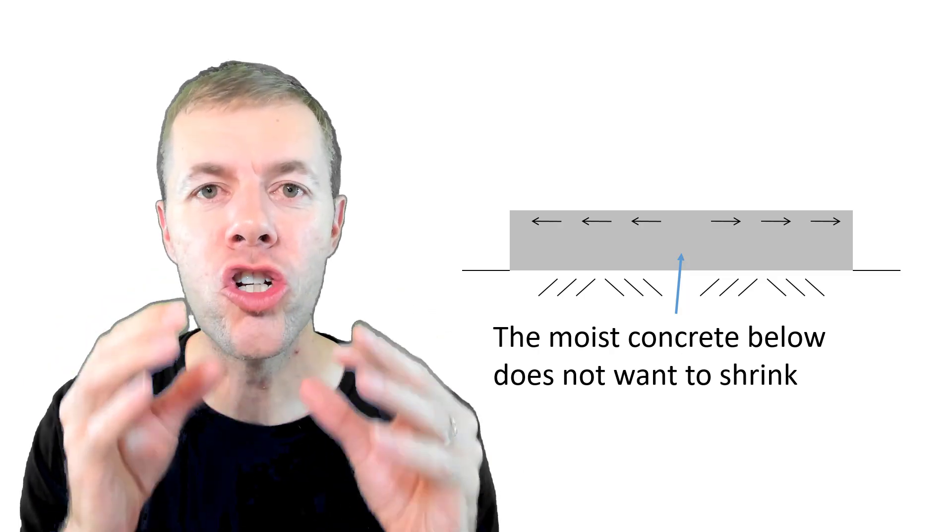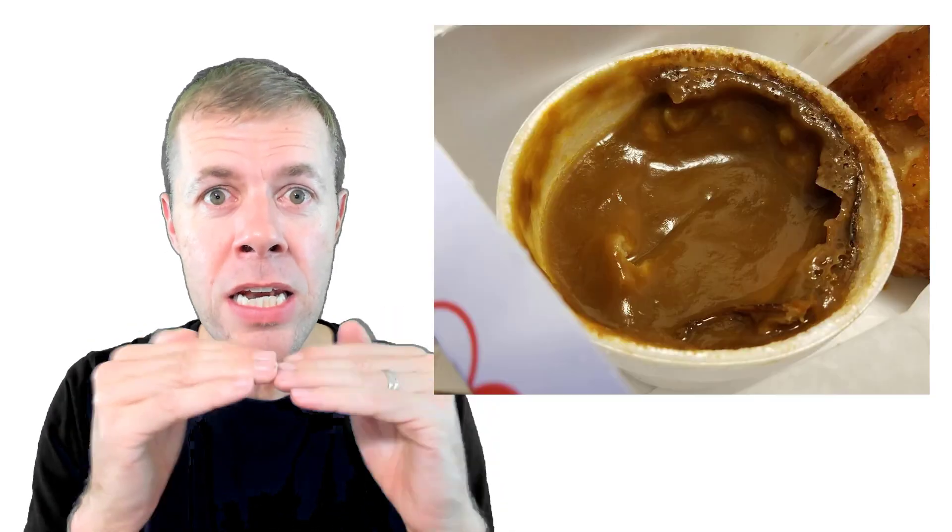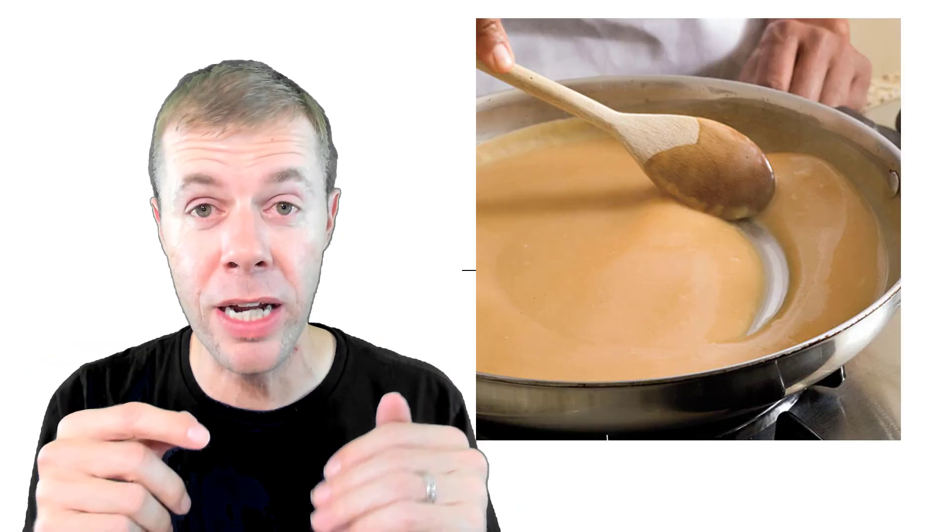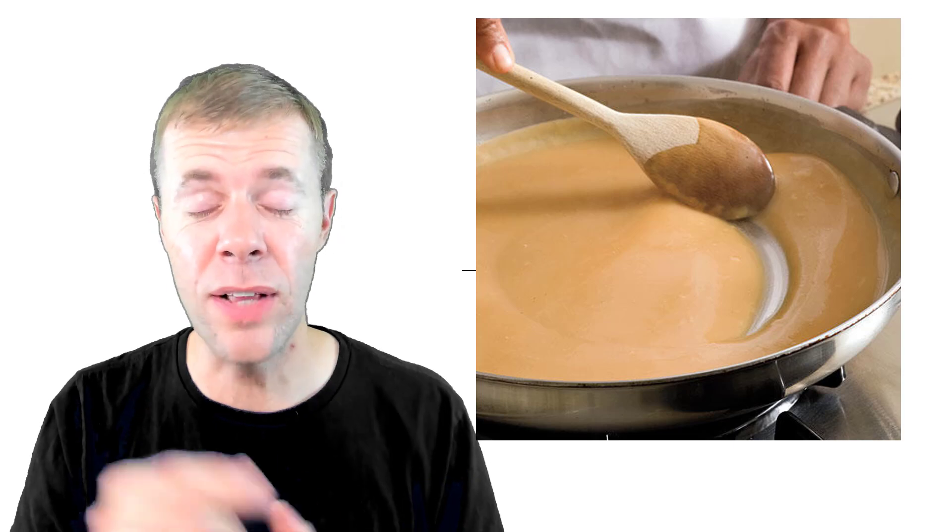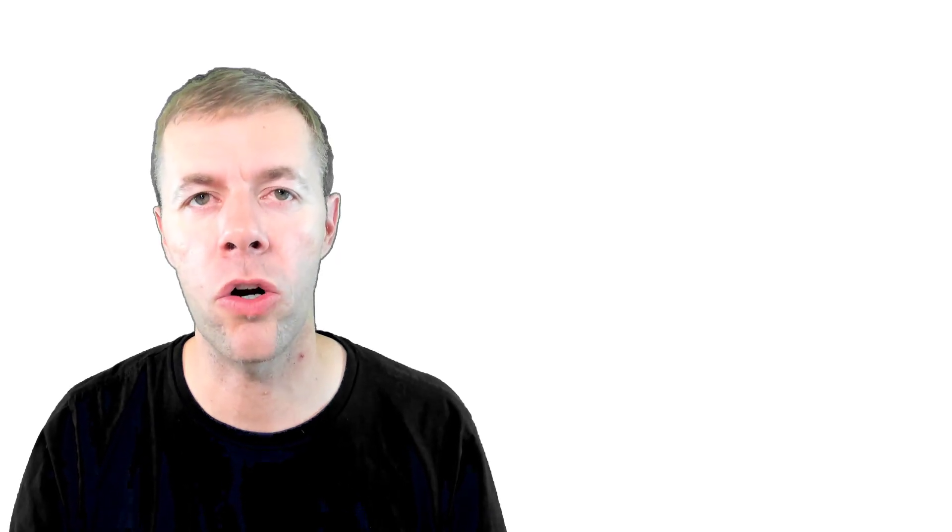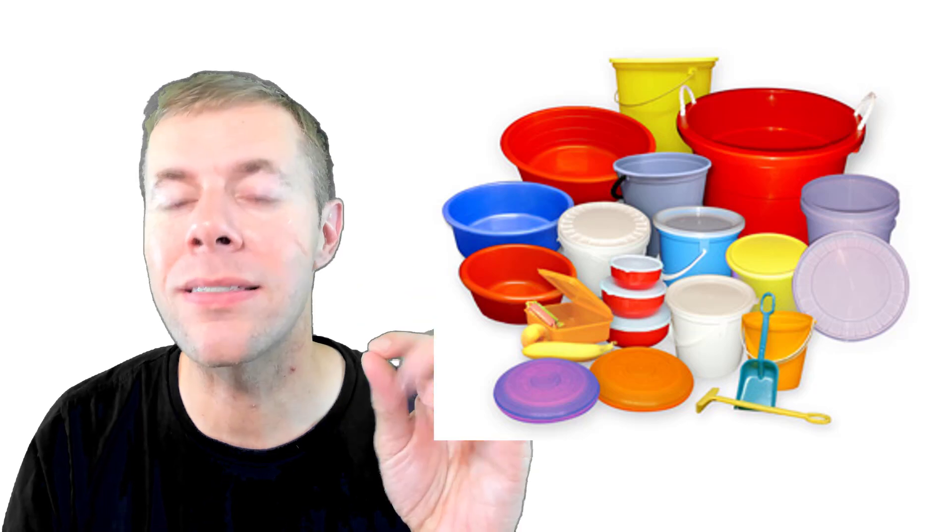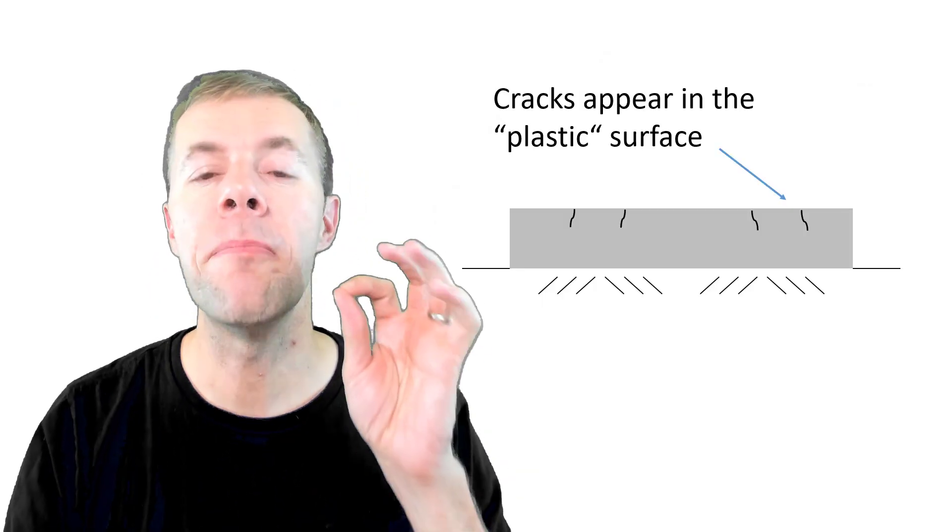This is just like making gravy. When you make gravy for Thanksgiving or your favorite gravy holiday, you get that thin layer on the surface of the gravy. You have to break up and stir over and over again. That's this layer. That gravy layer when it cracks is just like the plastic shrinkage cracking in concrete. These cracks appear in the plastic, not hardened, wet surface of the concrete.